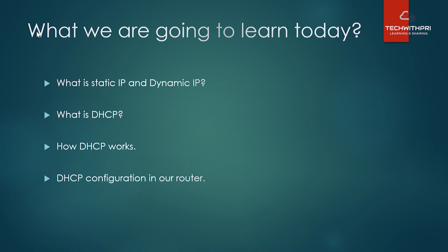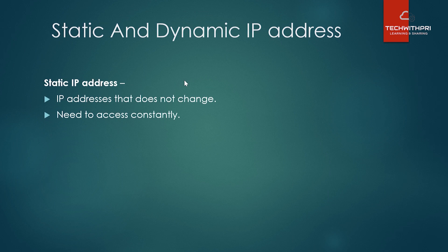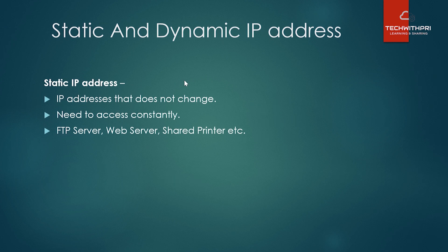Let's start with static and dynamic IP addresses. A static IP address — by the name 'static' — is fixed; it does not change. Static IP is used where certain servers need to be accessed frequently or constantly. For example, a file server in your office accessed by more than 100 people every day needs a consistent address. If that IP changes after a few days, you'd have to inform everyone of the new address.